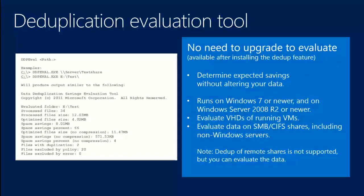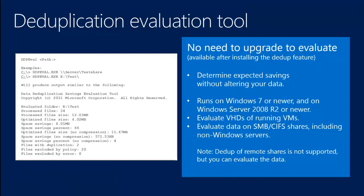The dedupe evaluation tool: install the role, then run ddpeval.exe. It'll tell you what the expected deduplication will be on a particular volume. It runs against a local volume or a remote volume over SMB. You can run it on another server and see what deduplication rate you'd get there. It runs on Windows 7 or newer on a client, and on Server 2008 R2 or newer on the server side — so it doesn't have to be a 2012 or 2012 R2 server.